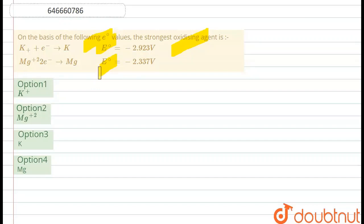Also, we need to find out which one is the strongest oxidizing agent. So the strongest oxidizing agent is the one which is able to oxidize others and itself get easily reduced. Now if you look here, we have been given two reactions. So this E⁰ value is the reduction potential which is given to us.